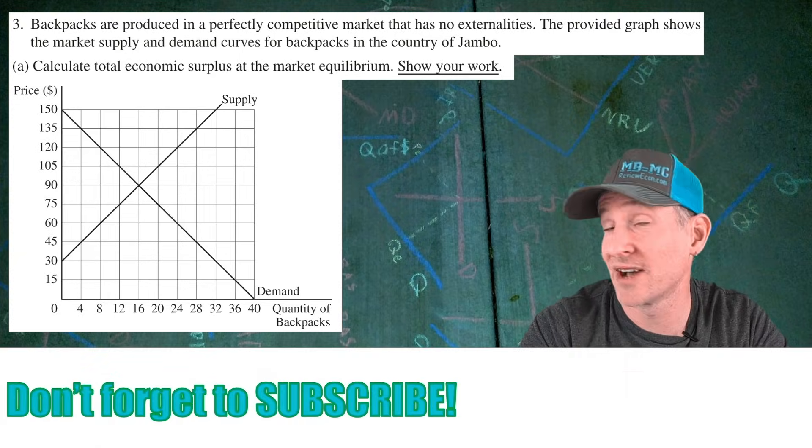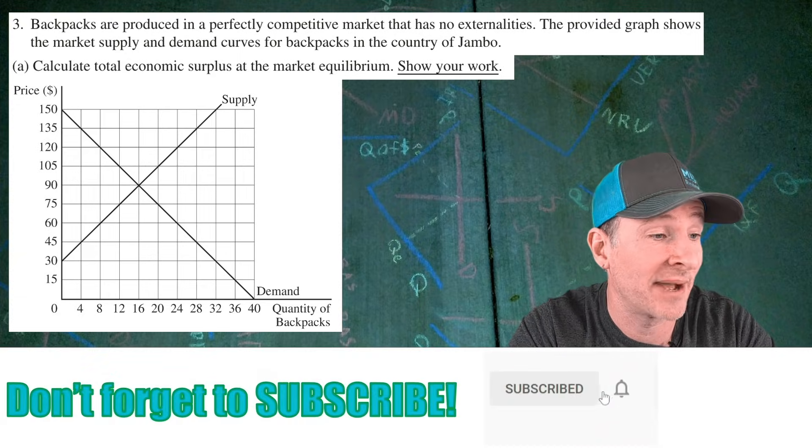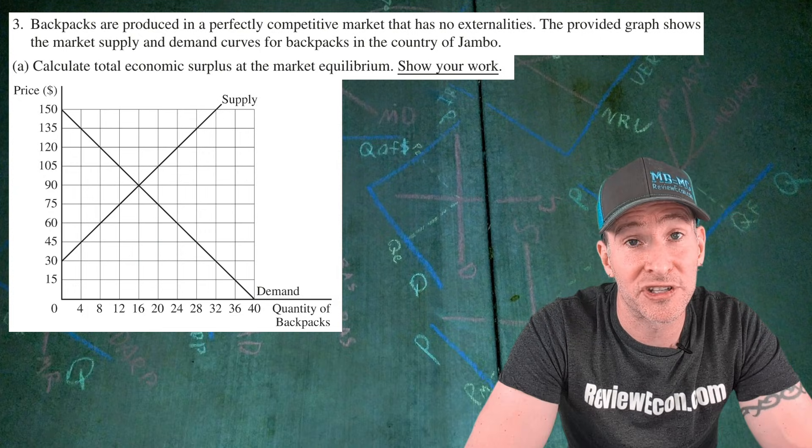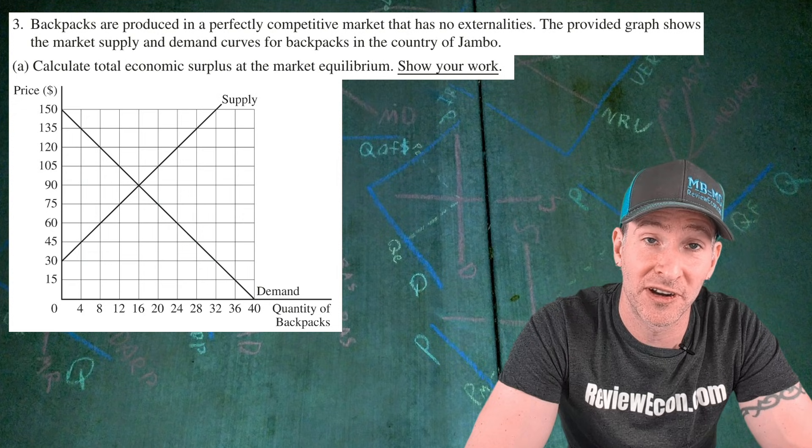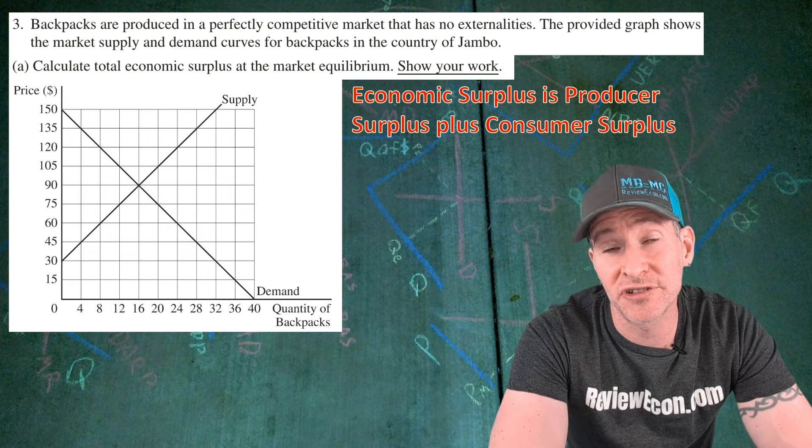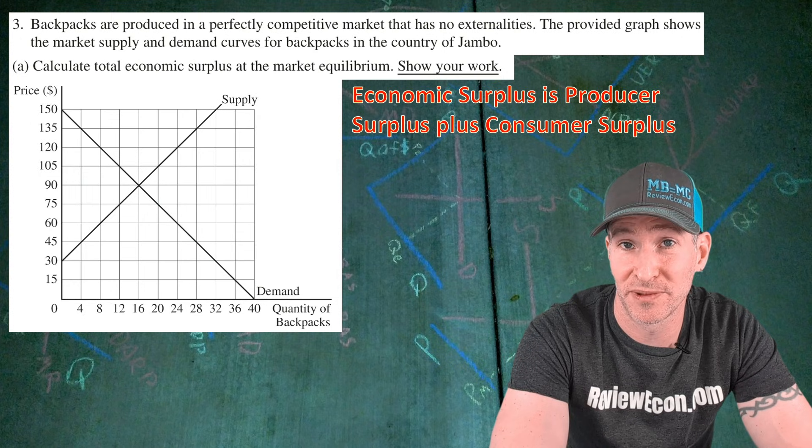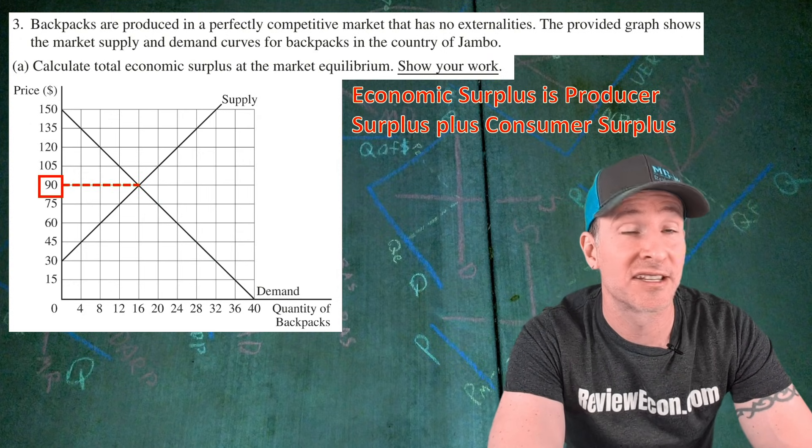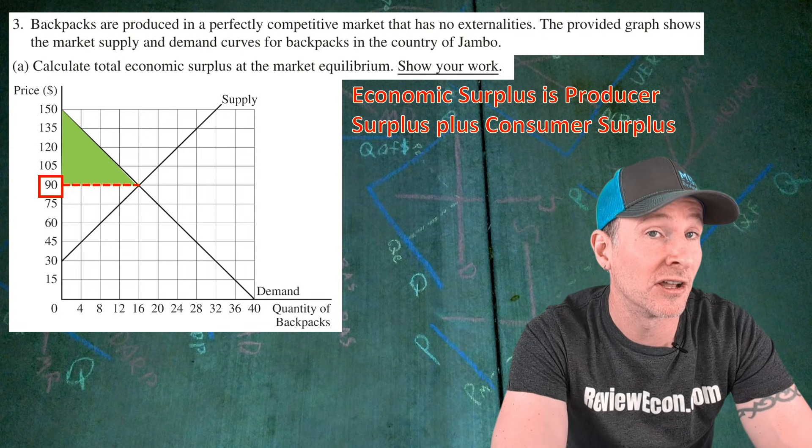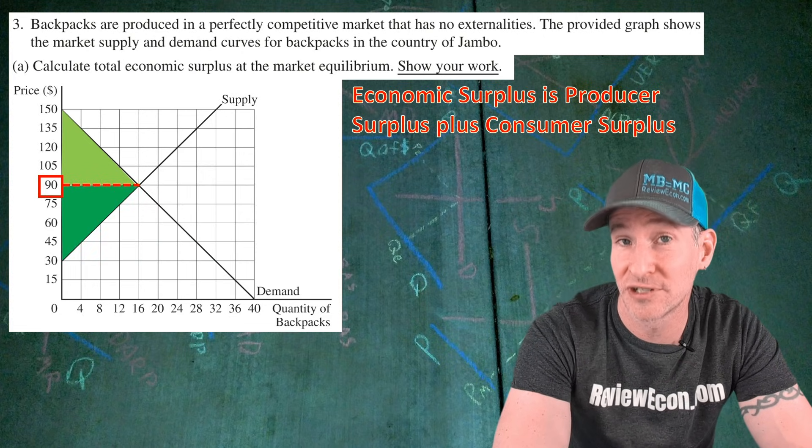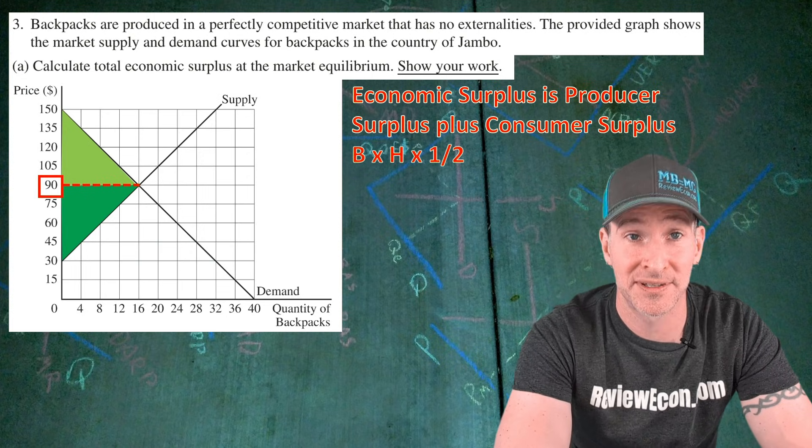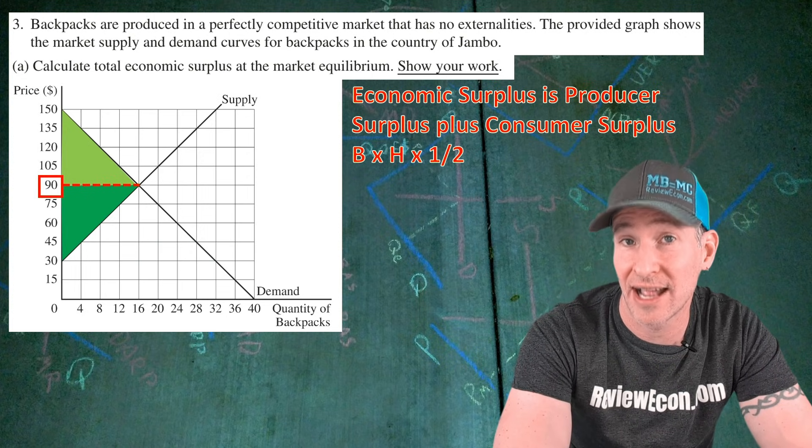For this question, we are provided with a graph. This is a graph for backpacks in a perfectly competitive market with no externalities. First thing we have to do is calculate the economic surplus at equilibrium within this market and show our work. Remember, economic surplus in this case will be producer surplus plus consumer surplus. At the market's equilibrium price of $90 all the way up to the demand curve is our consumer surplus. Below to the supply curve is our producer surplus.